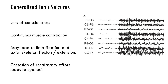There are seizures that are simply tonic — with a loss of consciousness and a continuous tonic muscle contraction, not the convulsions of a tonic-clonic seizure. People having generalized tonic seizures often stop breathing and may get cyanotic. This can be a cause of drop attacks and sudden loss of consciousness. The EEG shows that it's generalized with much faster activity, starting very abruptly.